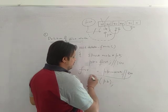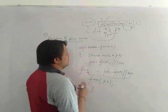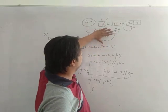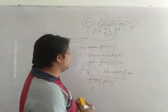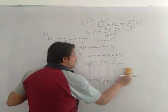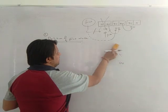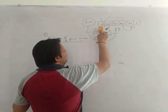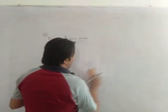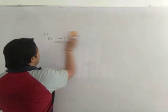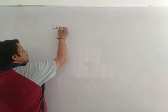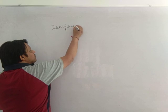Now first is pointing to 200, and the old connection breaks. This node is now isolated, and it is nothing but ptr, so write free(ptr). This deletes the first node. Now let's write a code for deletion of the last node.